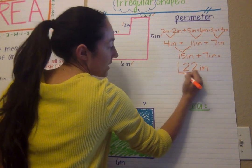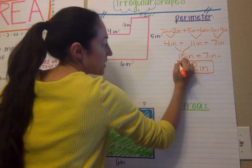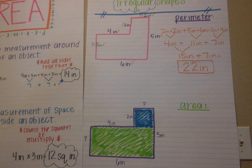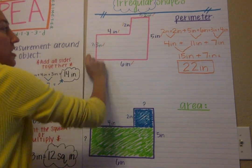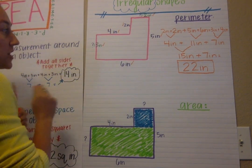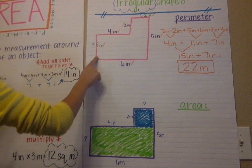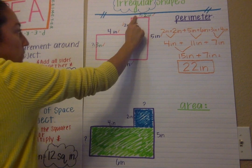Remember we only label this in inches because perimeter is only the unit we are measuring by. So now the perimeter of this shape is twenty two inches. If I needed to go get a border I would get twenty two inches of border to just fill the outside.